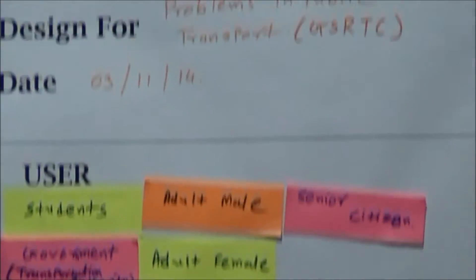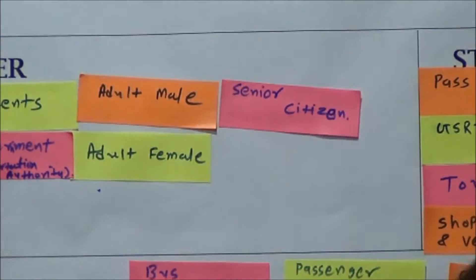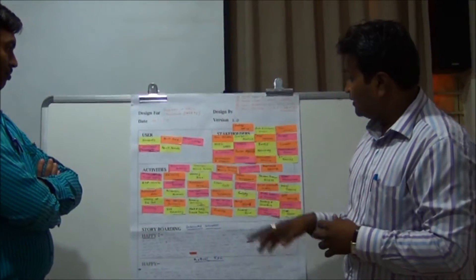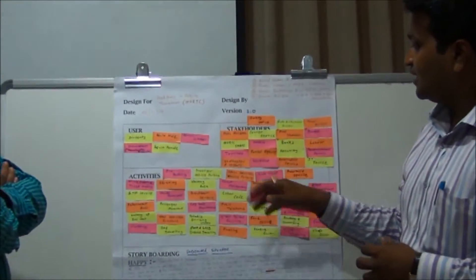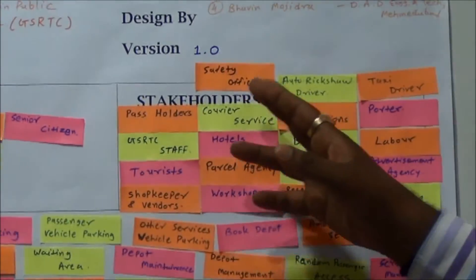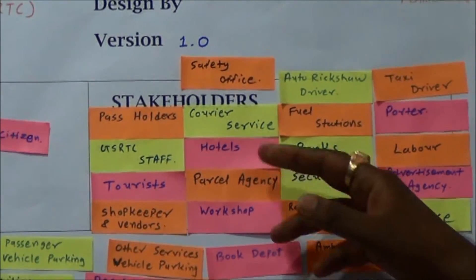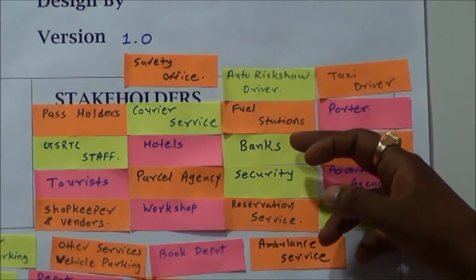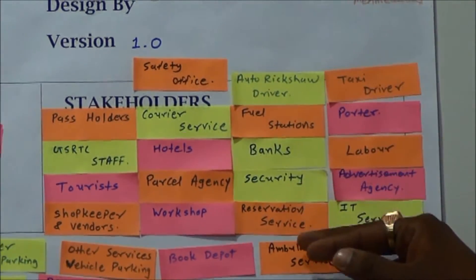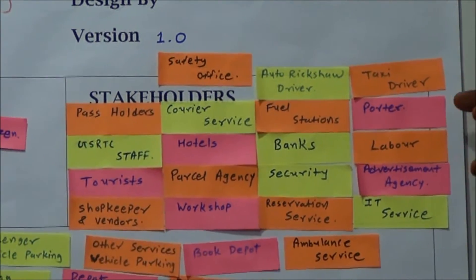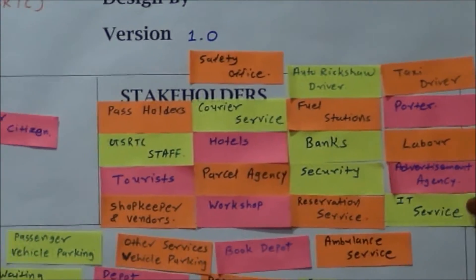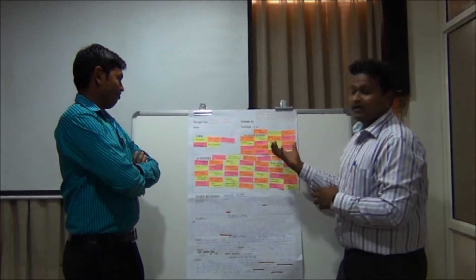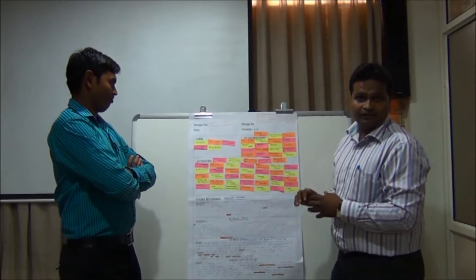Persons connected with this particular activity are stakeholders. Stakeholders include pass holders, GSRDC staff, tourists, shopkeepers, vendors, safety officers, courier service, hotels, parcel agency, workshop, auto rickshaw drivers, fuel stations, banks, security, reservation services, taxi drivers, porters, laborers, advertising agency, IT services, and safety officers. All these are stakeholders connected with this type of activity.